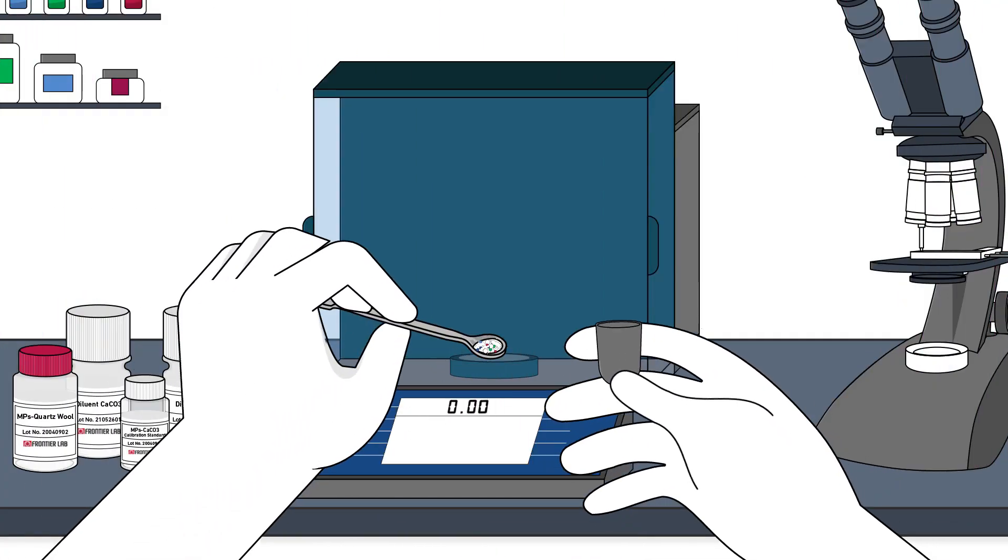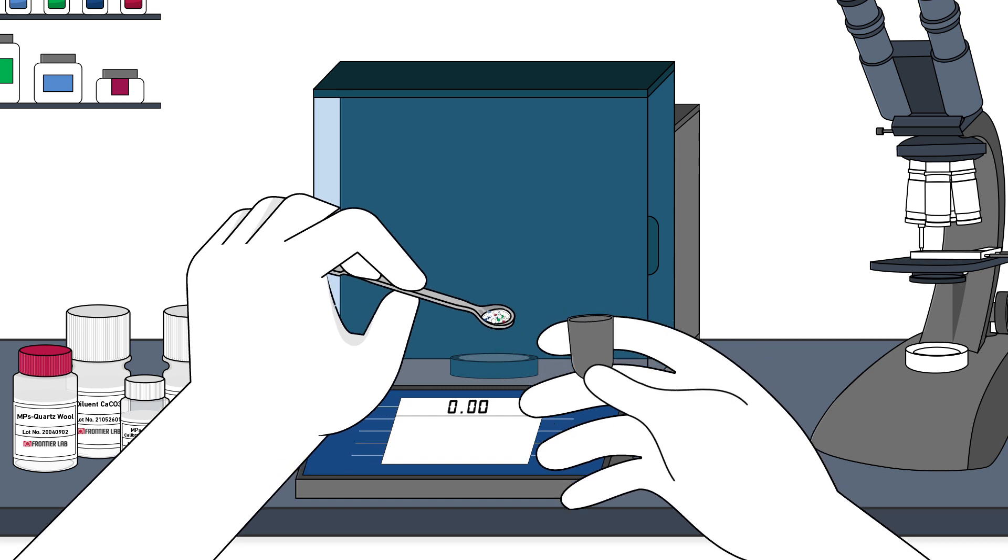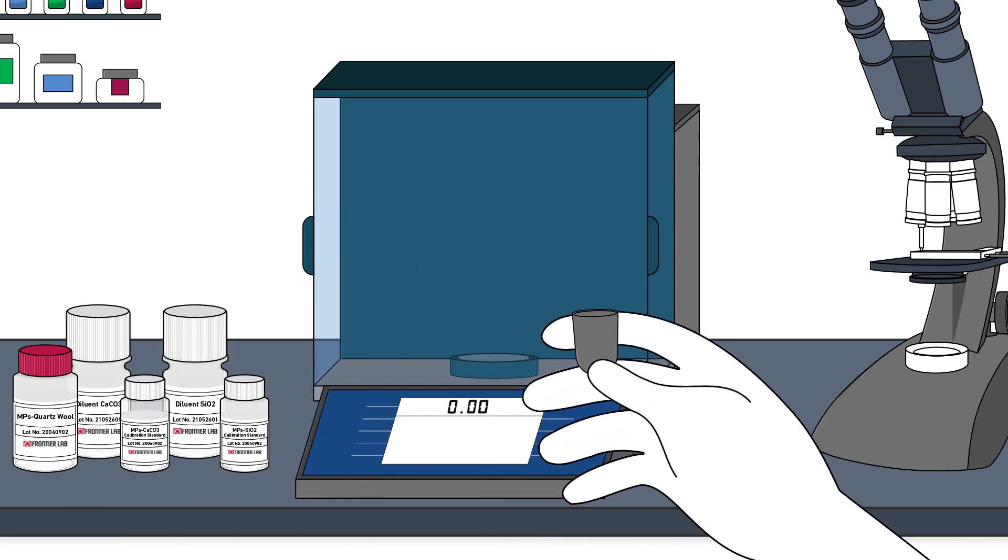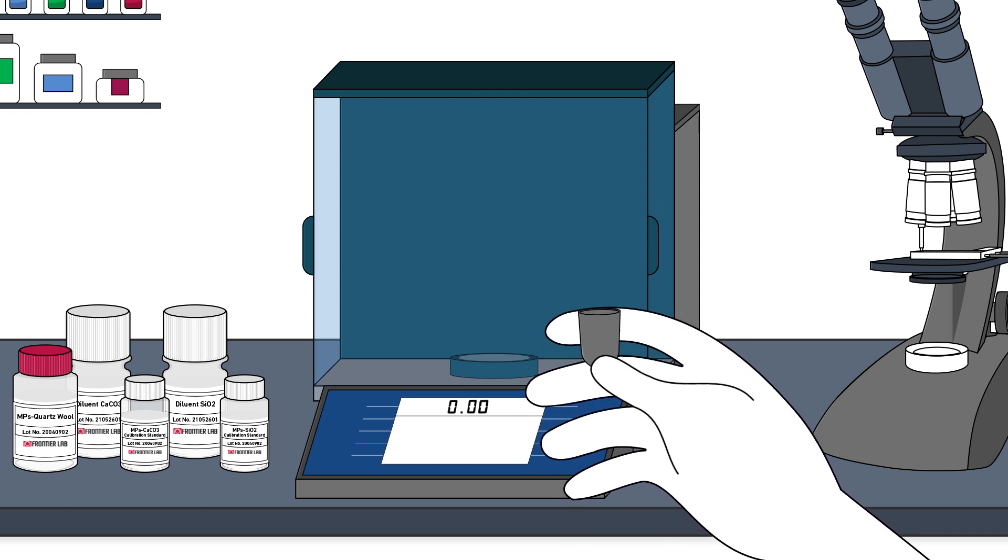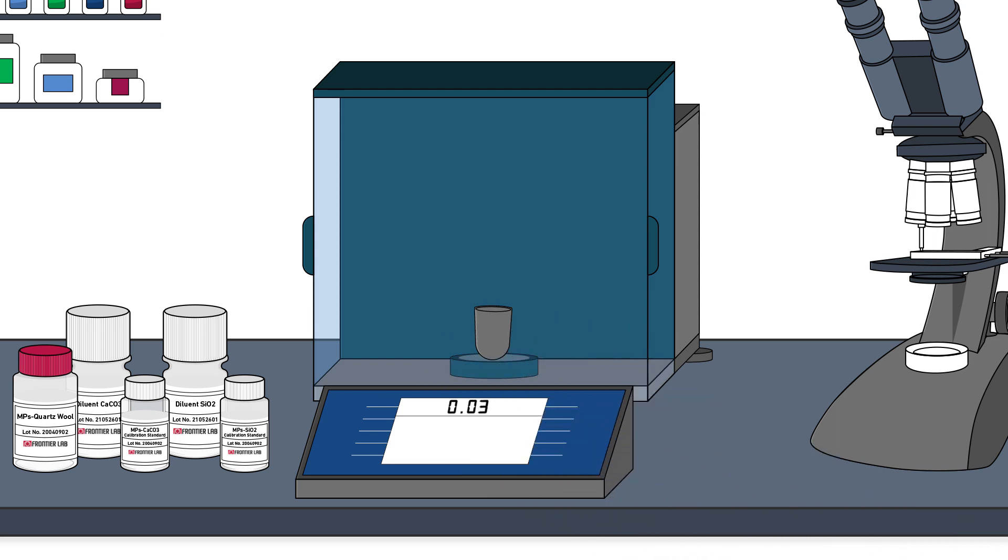So, how do you identify and quantify microplastics using Frontier's configuration? First, simply place micrograms of the calibration standard and your unknown sample, mixed with the diluent powders if using a semi-microbalance, into inert sample cups. Measure the weights, put them into the AutoShot sampler, and start your Microfurnace Pyrolysis GC-MS run.